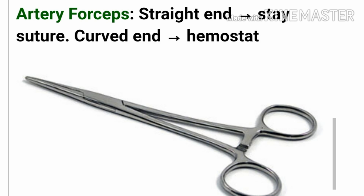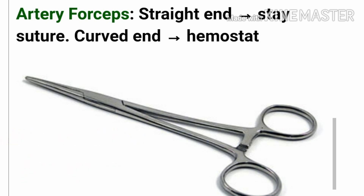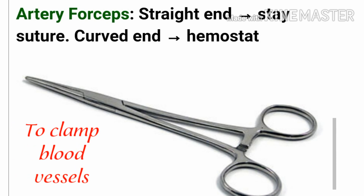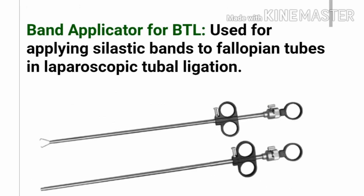The next instrument is the artery forcep, which is straight and stays sutured, cuffed, and used as a hemostat. The artery forcep is also called a hemostatic forcep or clamp. It has a straight design with a locking ratchet and strong grip. It is used for clamping blood vessels or tissue to prevent rupture during surgical procedures.